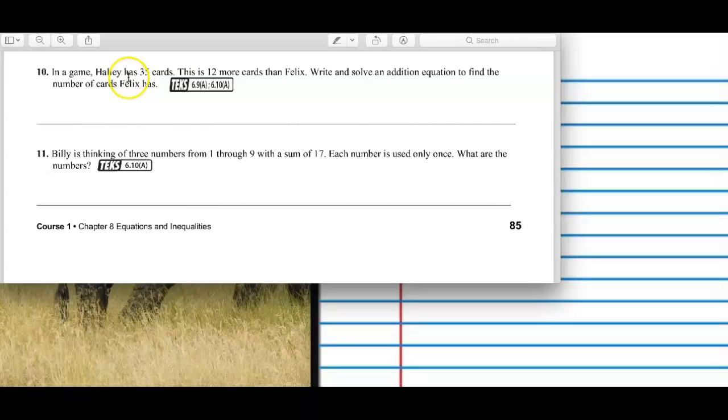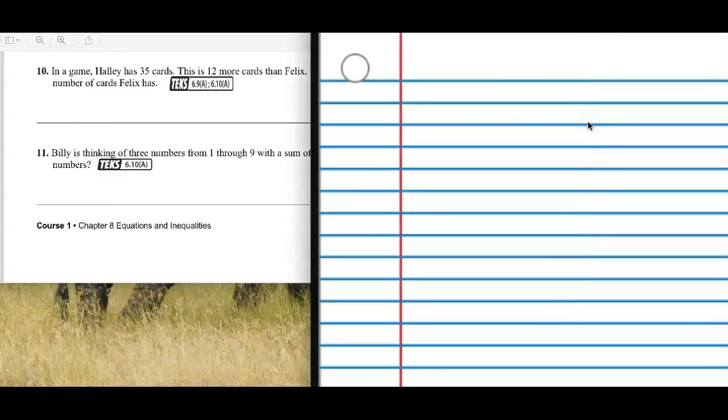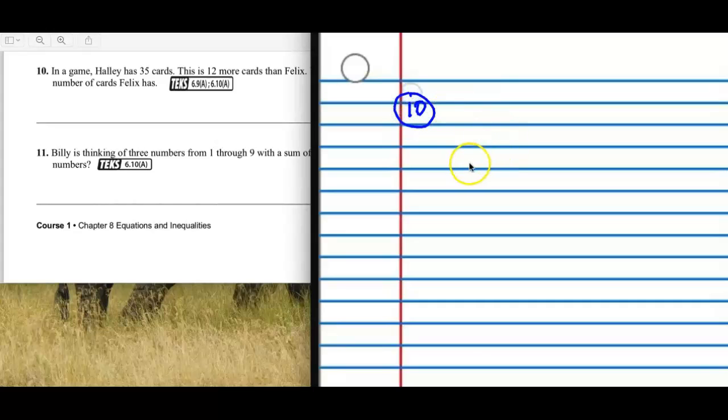In a game, Hallie has 35 cards. This is 12 more than Felix. So I'm going to stop and think, okay, so who's got more cards? Hallie has 35 cards. This is 12 more than Felix. So if we're putting this in a bar diagram, we need to remember Hallie has a larger amount than Felix. And this is write and solve an addition equation to find the number of cards that Felix has. So I'm going to go and click on my paper here and I'm going to very neatly write a 10 when I turn the pen on. So I'll write 10.